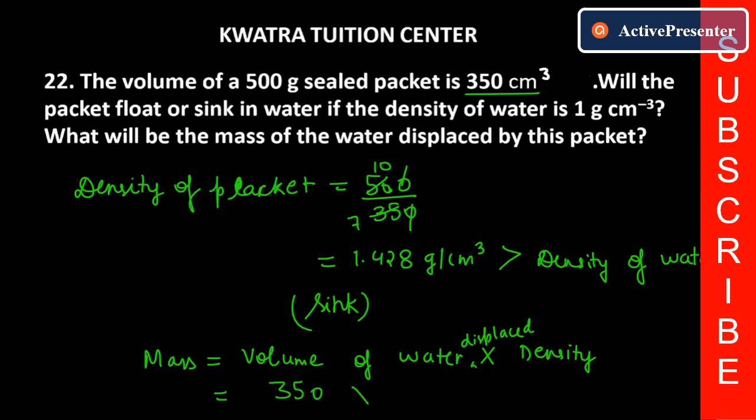Why will it be 350 centimeter cube? Because it is the volume of the sealed packet, so it should displace that much water. Now what is the density of water? The density of water is 1. And if you multiply 350 by 1, what will you get? 350 gram. So this is how you calculate mass. Mass is volume into density. This is the answer for question number 22.